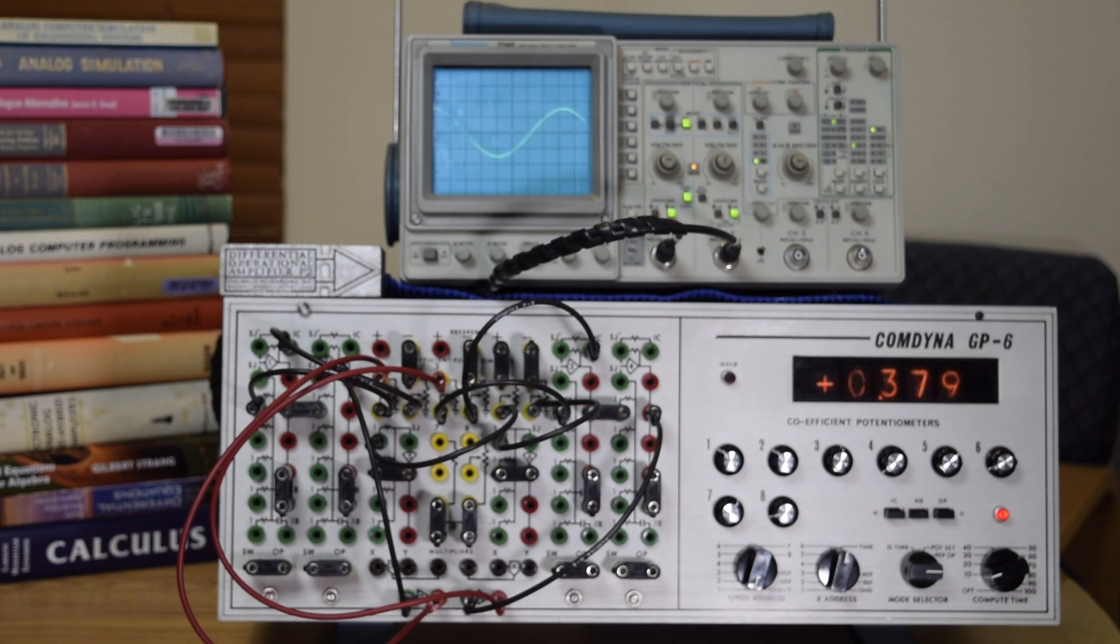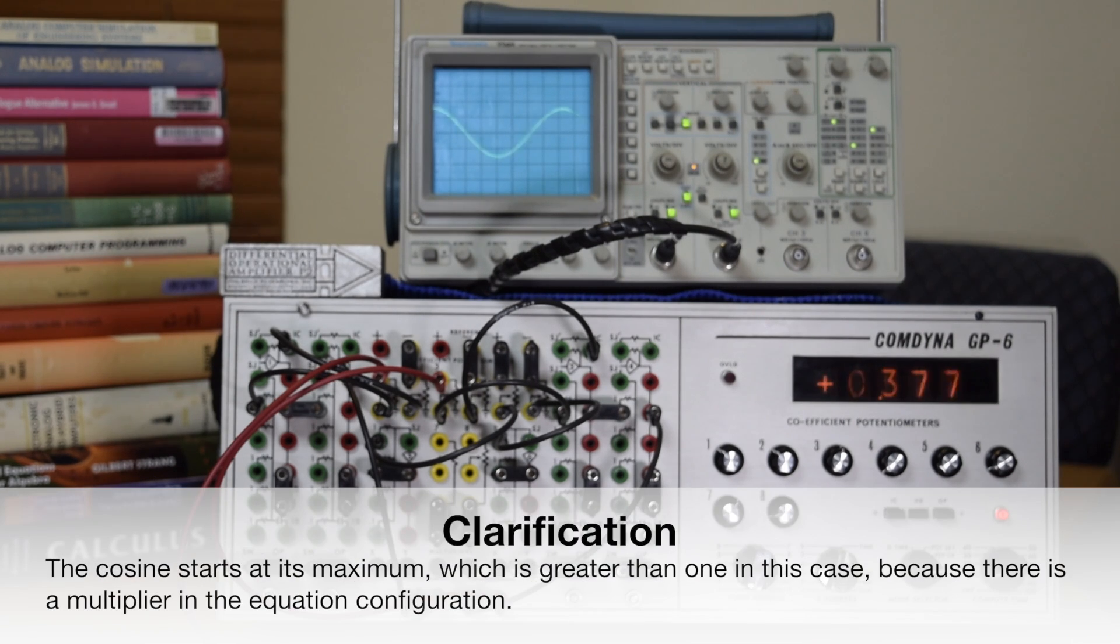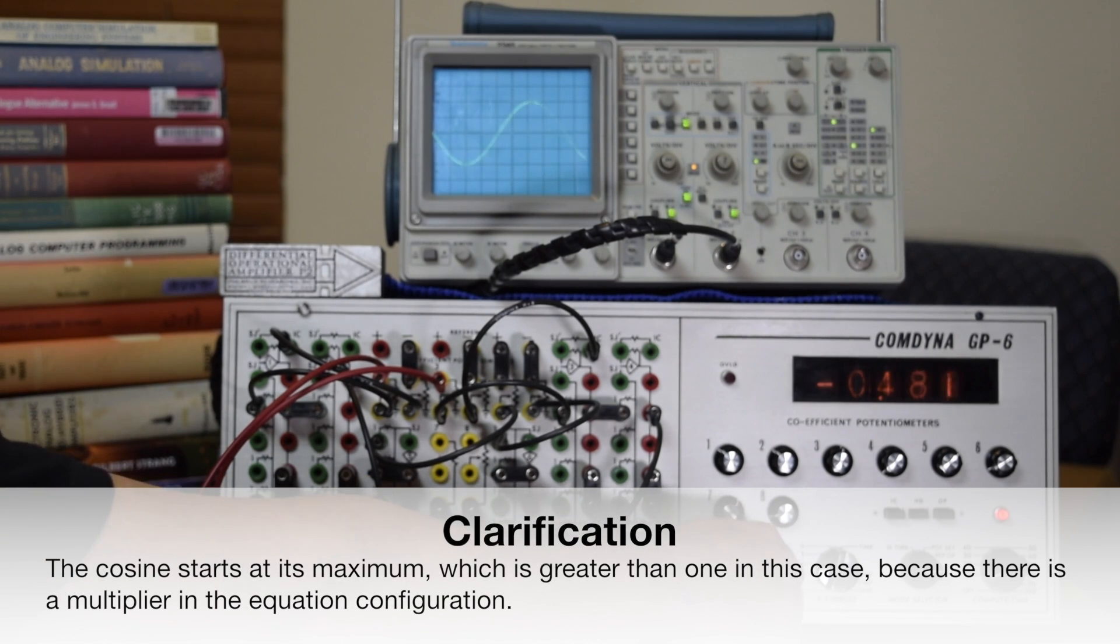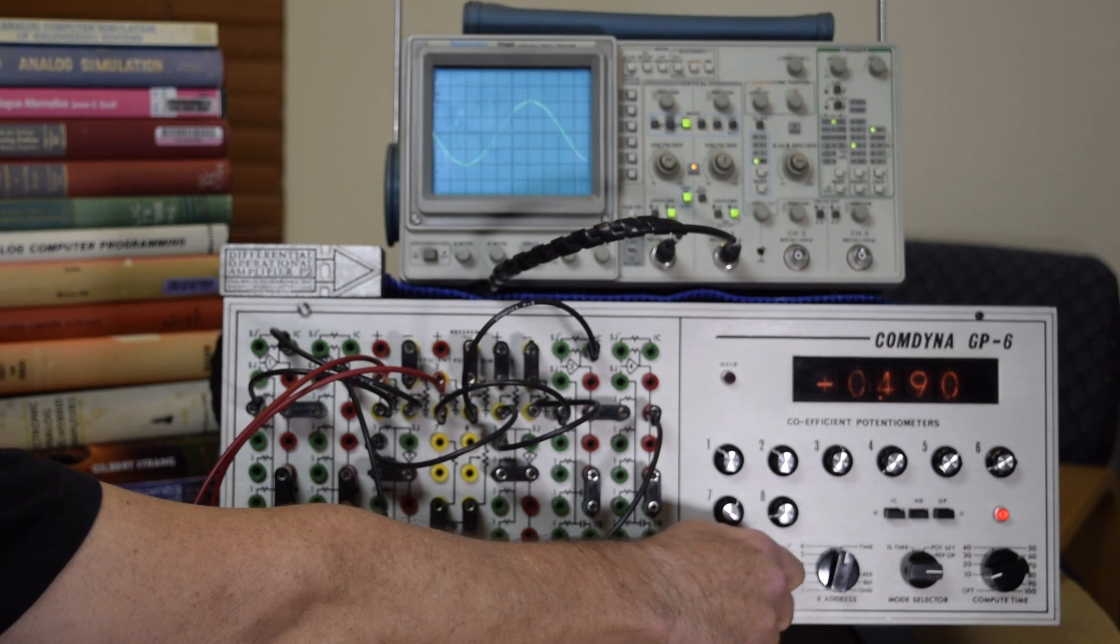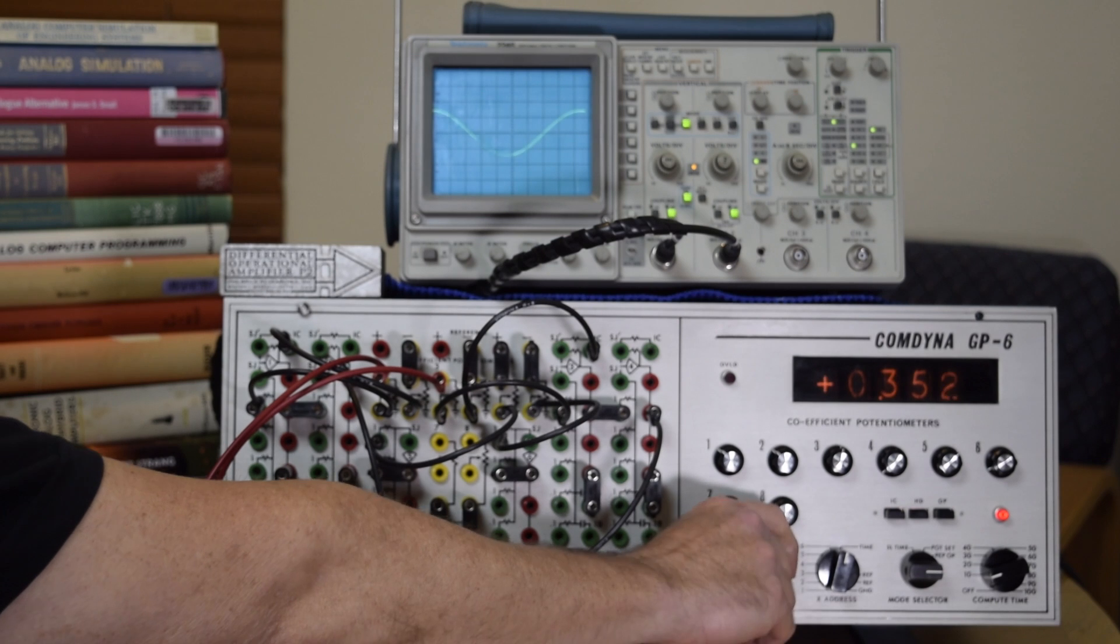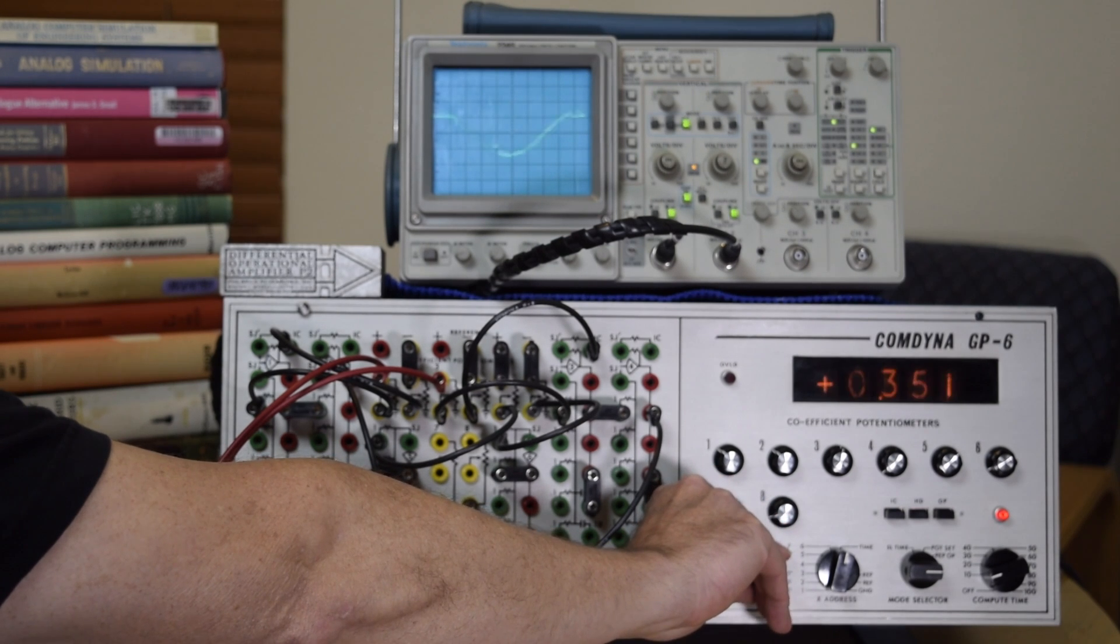So here on amplifier one I've got a cosine function. You can see that starts at positive one and has the typical cosine shape. And then on channel two I've got a sine function. It's actually an inverse sine function because the typical sine function starts out going positive, but this starts out going negative. And then I've got the same thing on channels three and four.